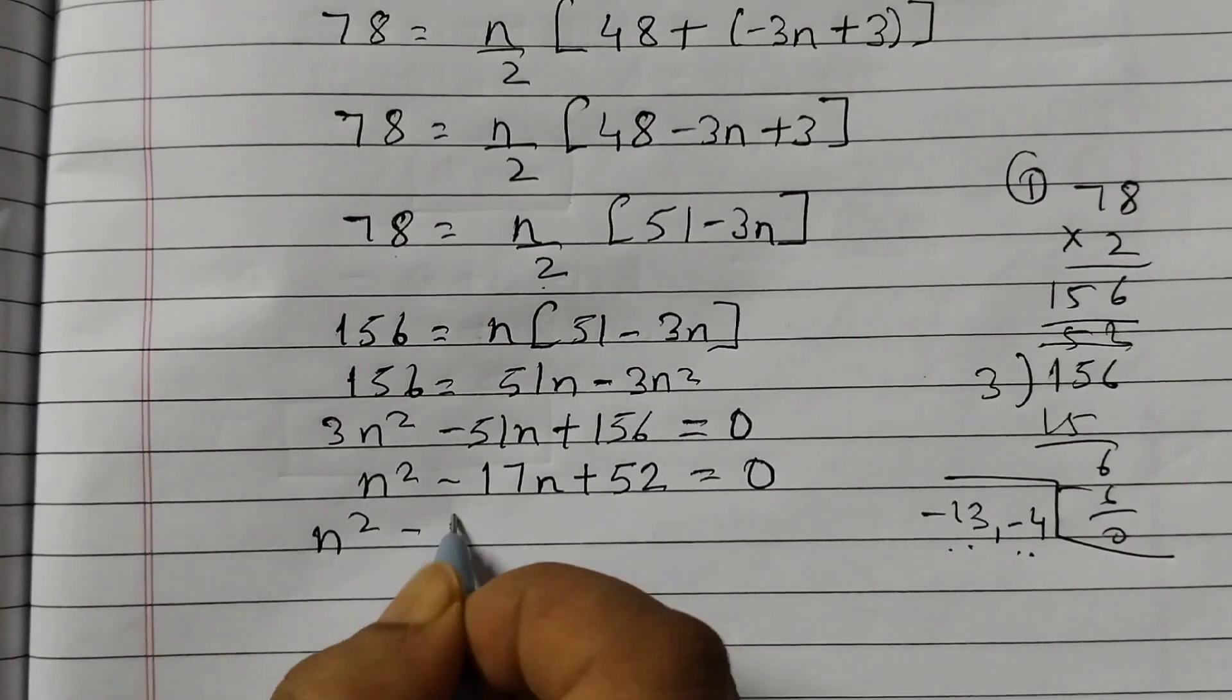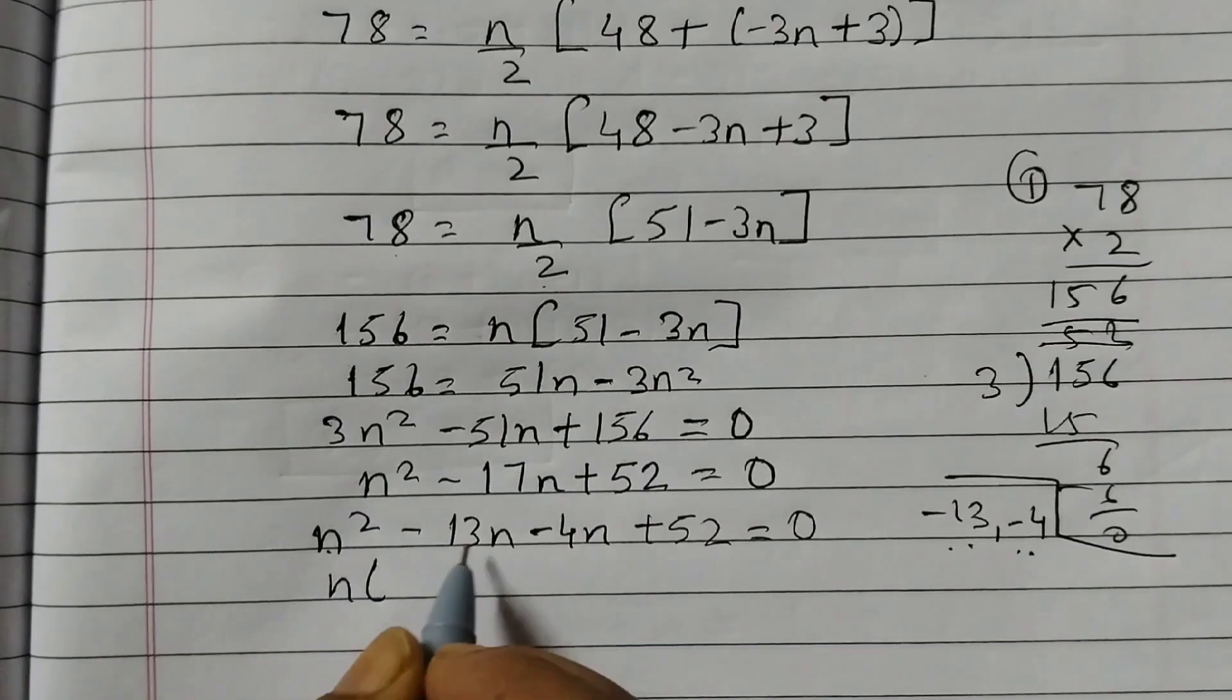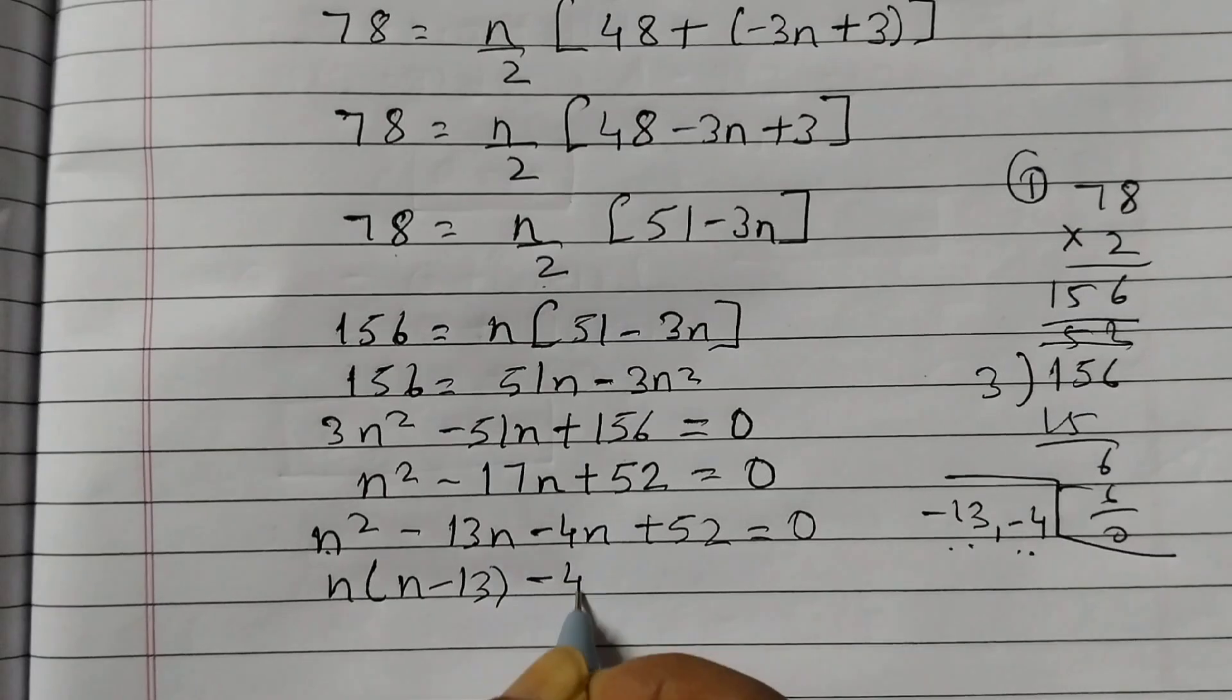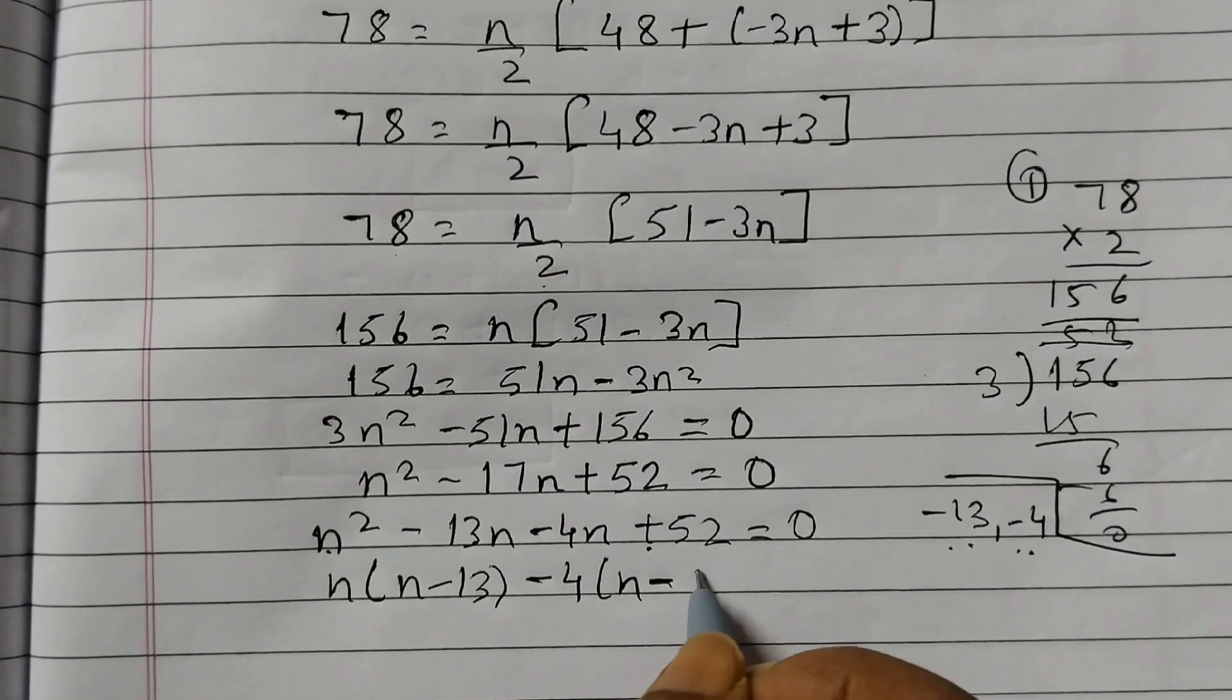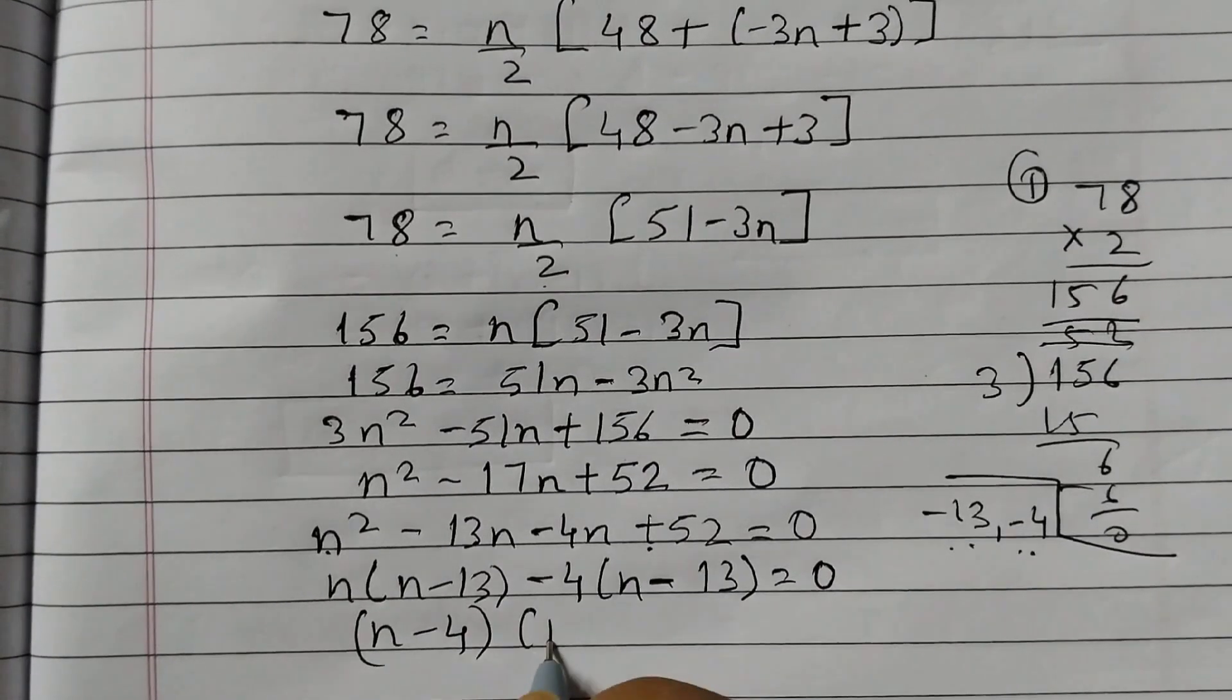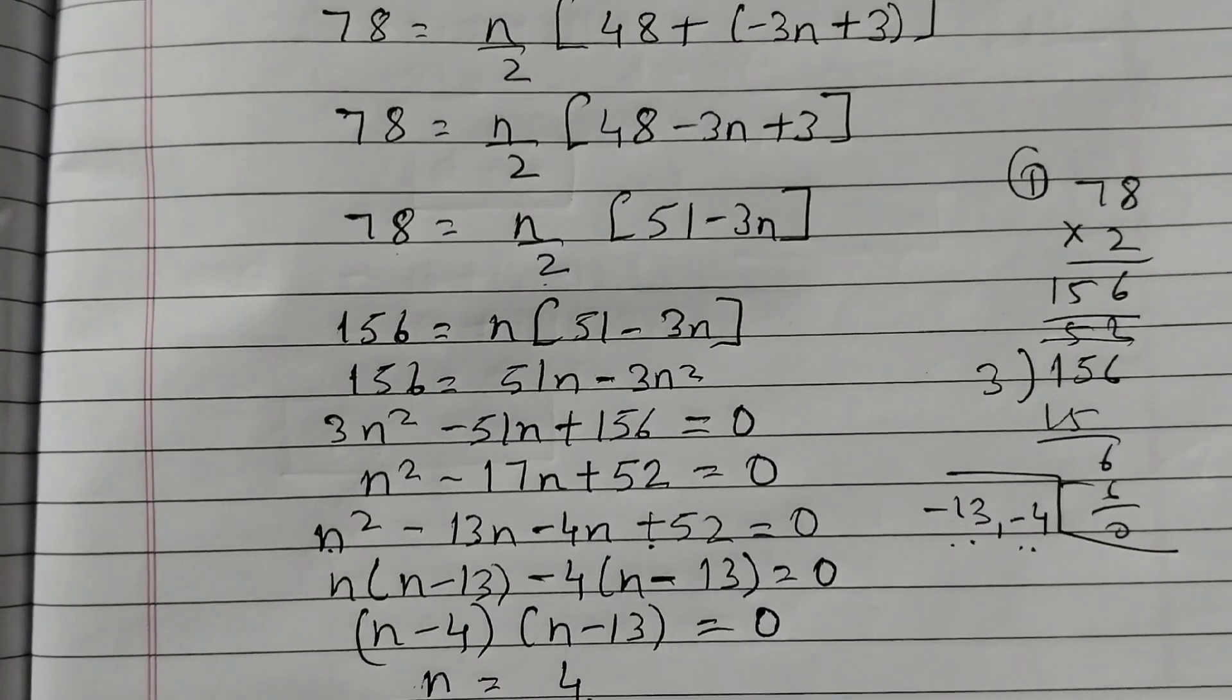So split the middle term minus 13n minus 4n plus 52 equals to 0. Now these two terms you take out the common factor, n minus 13 minus 4 is the common factor and then we have n minus 13 equals 0, n minus 4 and n minus 13. That means we are getting n as 4 or n as 13.